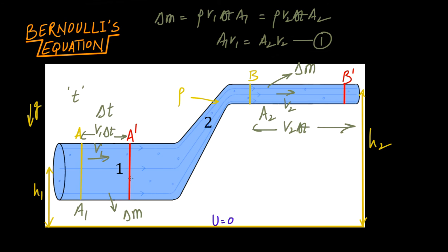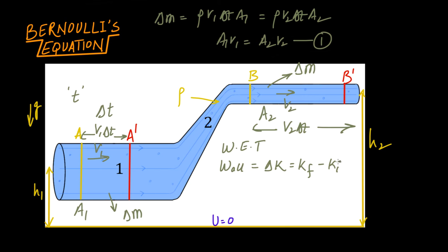Now I want to figure out all the forces acting on the system and find the work done by those forces. I want to apply the work-energy theorem, which states that the work done by all forces on a system equals the change in kinetic energy of the system — that is, final kinetic energy minus initial kinetic energy.